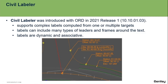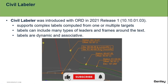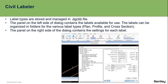Labels can include many types of leaders, frames around the text, and so on. Each label will be dynamic and associative with the selected element. As with the annotation group, the definitions for the labels are stored in a digital library inside your workspace.